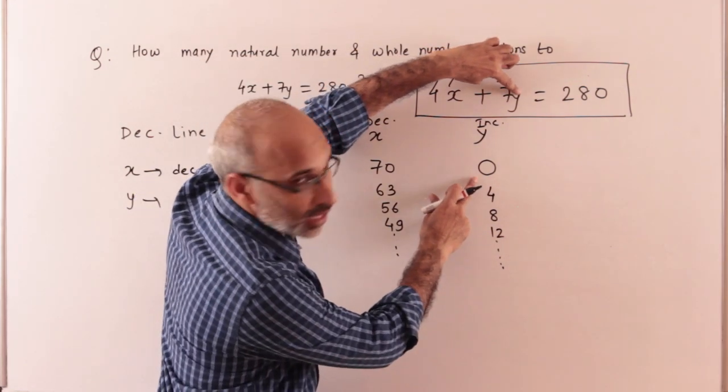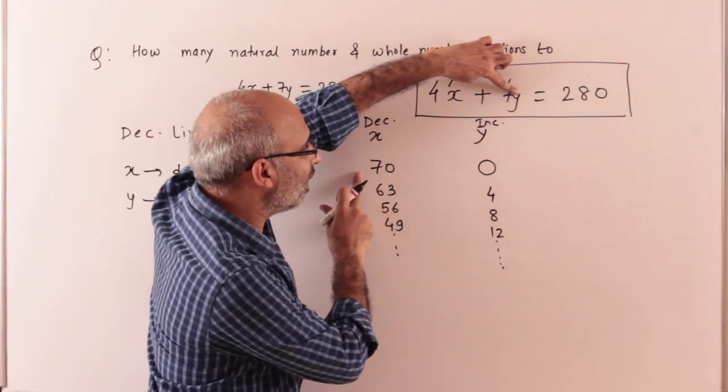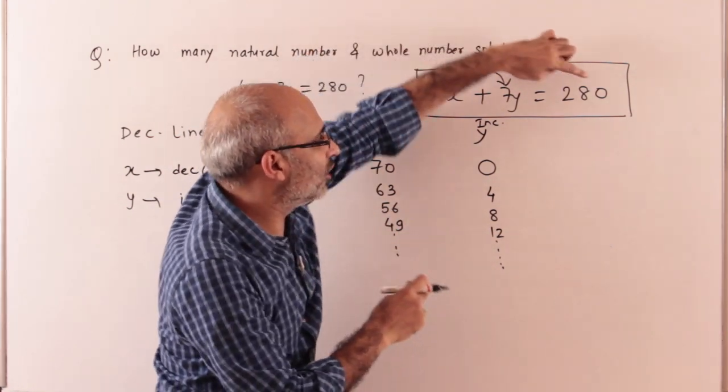So once I have taken this value of y, then the value of x was 70. Since the number was divisible by 4, I can also take x to 0.